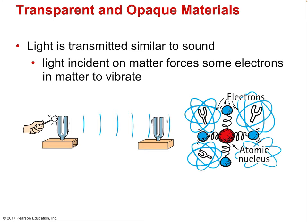Light is transmitted similarly to sound. Light incident on matter forces some electrons in the matter to vibrate, just like sound can force a tuning fork to vibrate if it matches its resonant frequency. We can think of atoms as tiny tuning forks with particular natural frequencies — if the light matches those natural frequencies, they're easily vibrated, and that's what transparency is all about. As light passes through glass, it goes from atom to atom causing vibration. When that atom vibrates, it produces light that then vibrates the next atom down the line, and it goes through a series of atoms transmitting through the material.